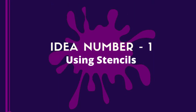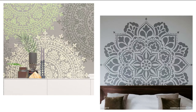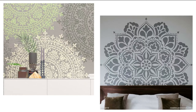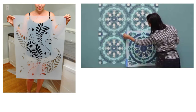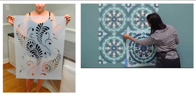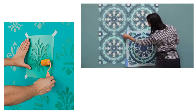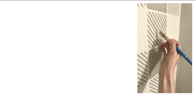Idea number one: using stencils. Using a stencil is a smart and easy idea for those who don't want to give much time or don't have very good art skills. Is ko karna bohat hi aasaan hota hai. Aapko bas apne favorite stencil ko lehna hai, aur already painted and clean wall pe stick karna hai. Then paint it with your required color and remove the stencil carefully. Let it dry completely and then give it a finishing touch. And yeah, it's done.